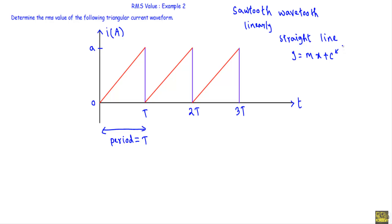Here the current is going through the origin, so the y-intercept will be equal to zero. In the x-axis we are taking time t, so the x variable will represent time. In the y-axis we are taking current i. This is our origin so it has coordinates (0, 0), and this point has x-coordinate T and y-coordinate A, giving coordinates (T, A).